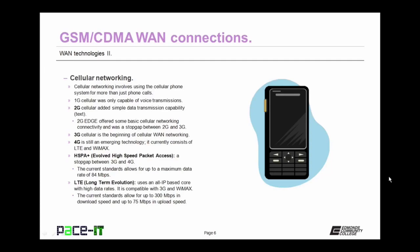As a special mention, we need to talk about evolved high-speed packet access, HSPA+. It was a stopgap between 3G and 4G networking and is still available today. The current standard for HSPA+ allows for up to a maximum data rate of 84 megabits per second. LTE — long-term evolution — uses an all IP-based core with high data rates. LTE is compatible with both 3G and WiMAX, and the current standard allows for up to 300 megabits per second in download speeds and up to 75 megabits per second in upload speeds.